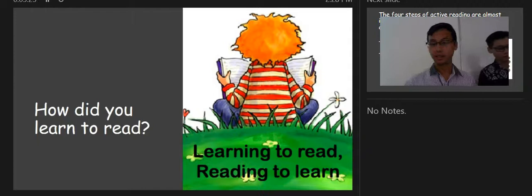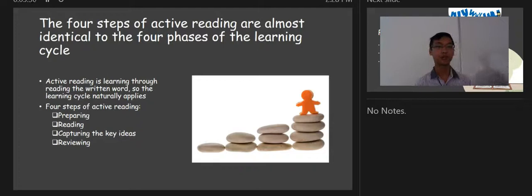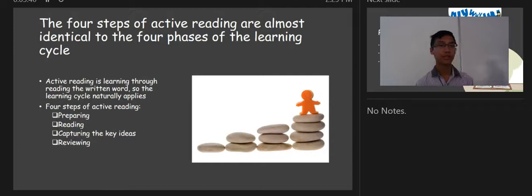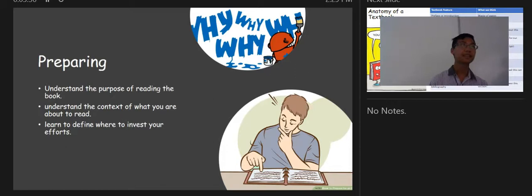There are four steps of active reading, which are almost identical to the four phases of the learning cycle. Active reading is learning through reading the written word. The four steps are: preparing, reading, capturing key ideas, and reviewing.